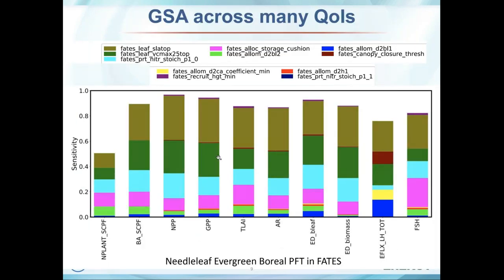This is another study done with Jennifer. The previous one was over the time horizon; this one is over several quantities of interest — average quantities from the mid-leaf over green boreal PFT. Again, this allows us to reduce the dimension in input parameter space.